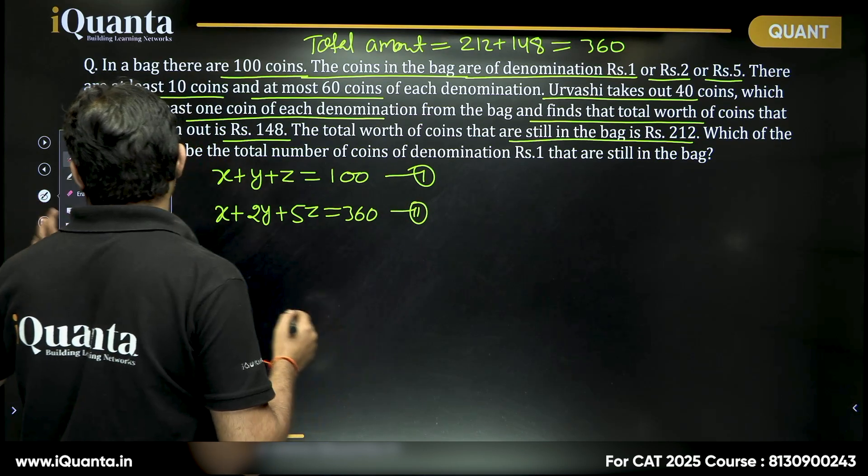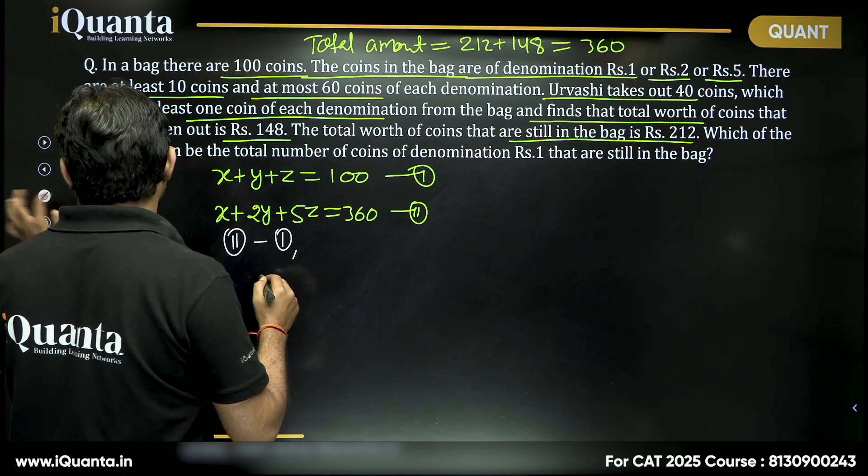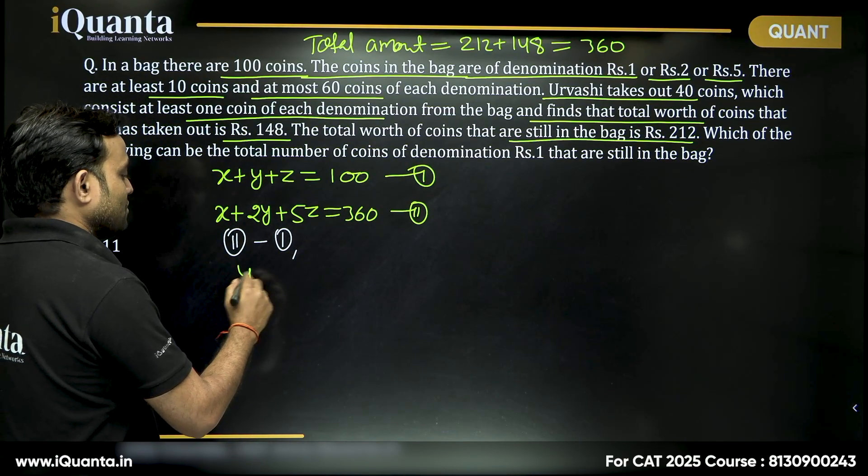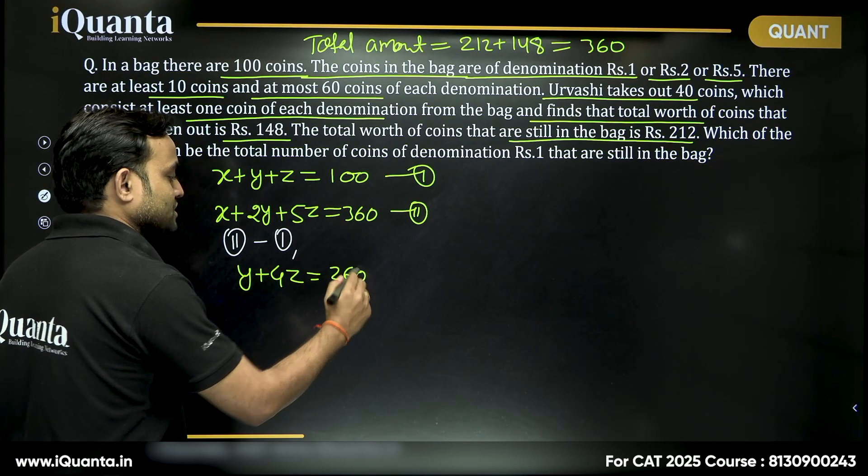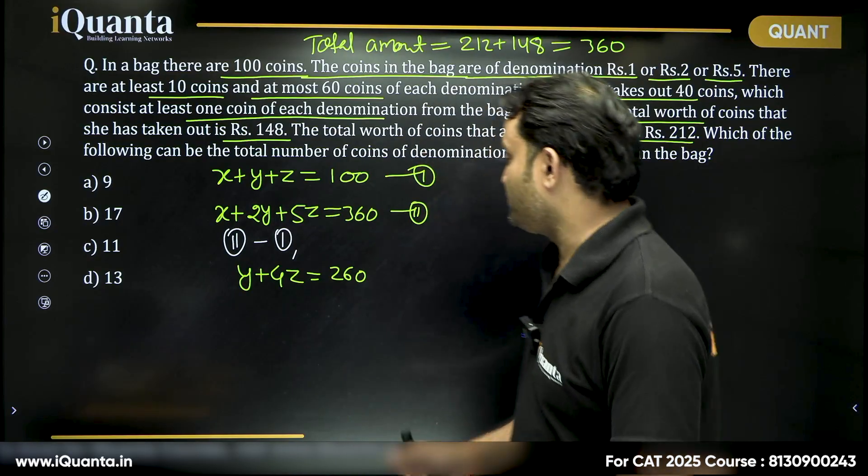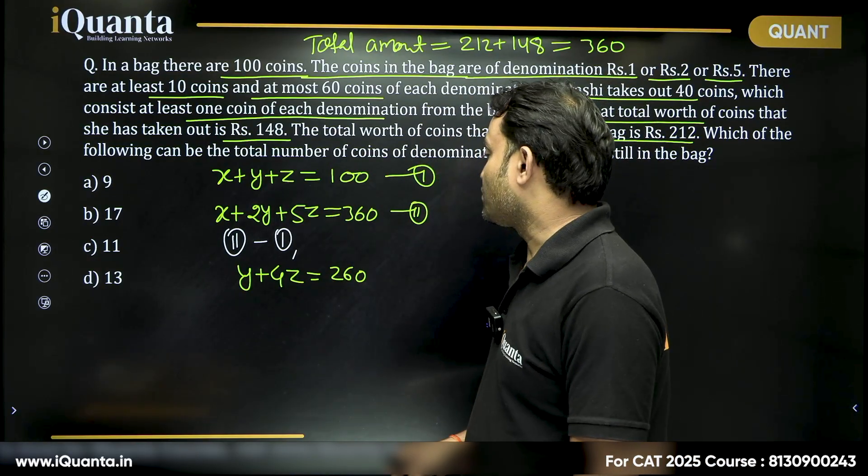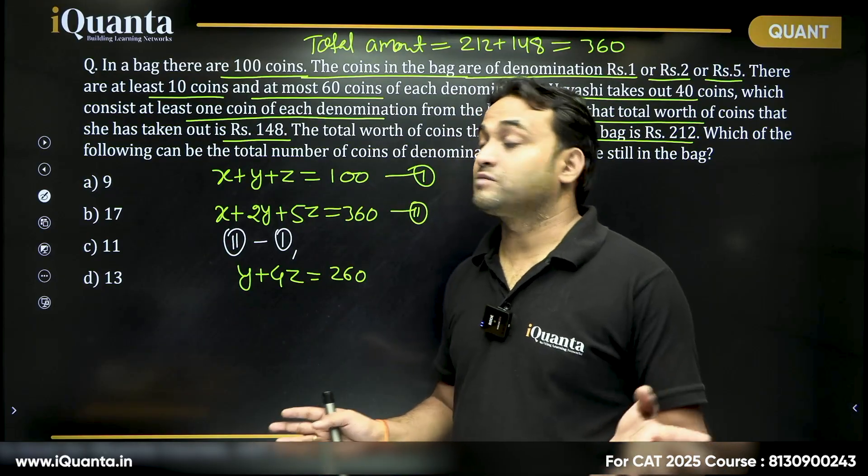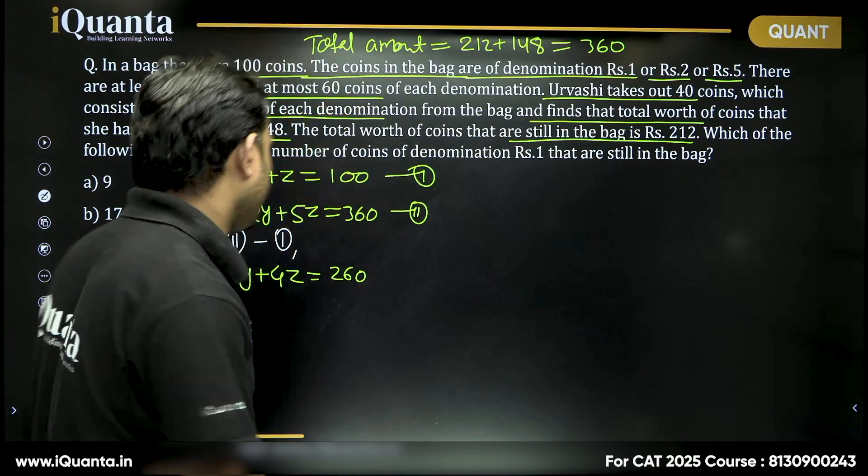Now if we subtract equation 1 in equation 2 what are we getting? x minus x will be cancelled out, y plus 4z will be equal to 260. Now minimum is 10 right? If I am putting minimum 10, z is 40 then y will be equal to 220 which is not possible because x plus y plus z is 100. So let us start with maximum values.